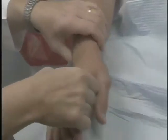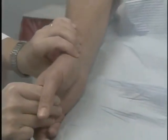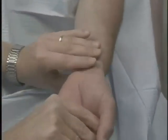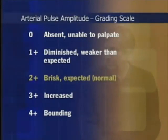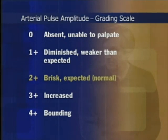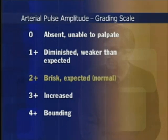Next, palpate the radial pulses using the pads of your fingers on the flexor surface of the wrist laterally and compare their amplitudes. A grade of 2+ indicates a brisk or normal pulse. A grade of 0 indicates an arterial pulse that is absent and not palpable. A grade of 1+ indicates a pulse that is diminished — weaker than expected. Grade 3+ indicates a pulse which is increased, above what is expected, while grade 4+ indicates bounding and possible aortic insufficiency.